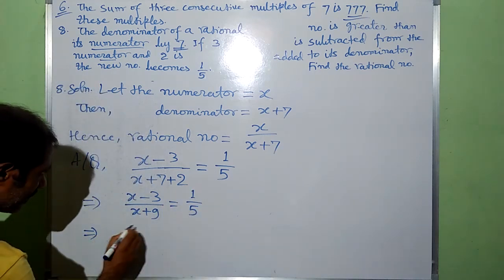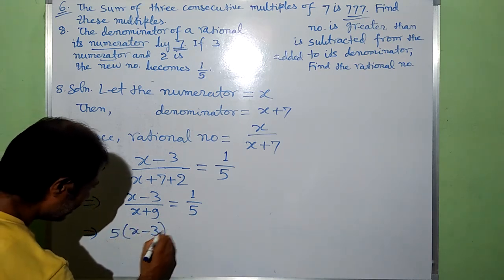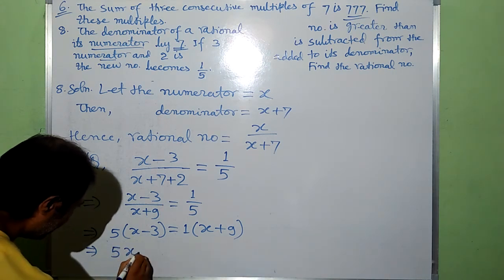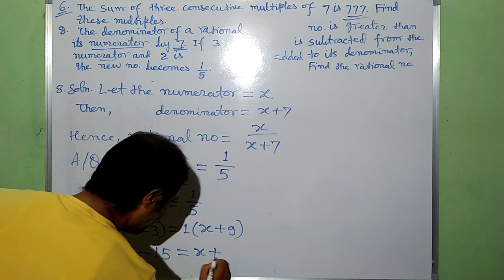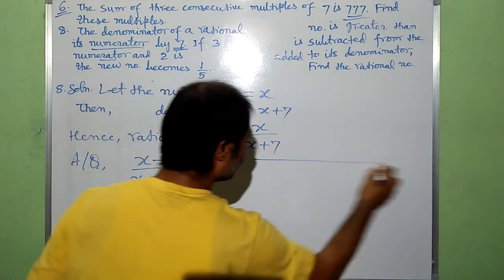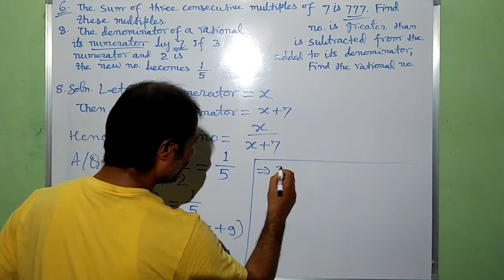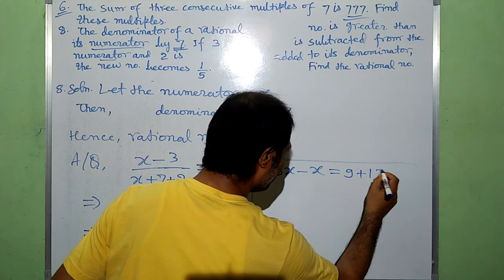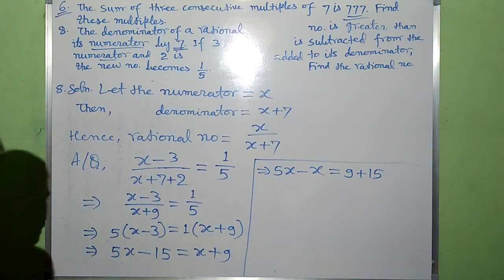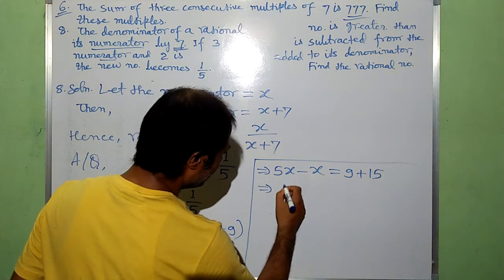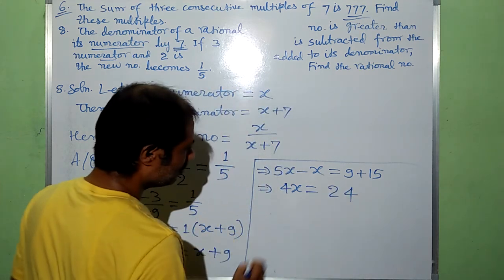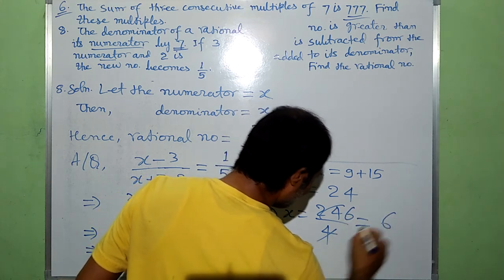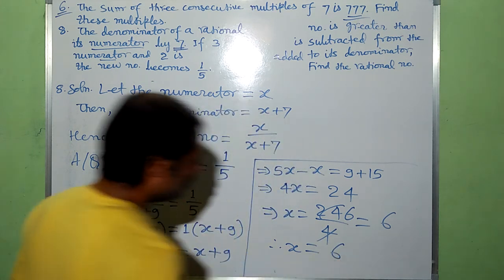Now do cross multiplication: 5 into x minus 3 equals 1 into x plus 9. This gives 5x minus 15 equals x plus 9. Transposing: 5x minus x equals 9 plus 15. This implies 4x equals 24, so x is equal to 24 by 4, which gives x equal to 6. The value of x is obtained, x is 6.